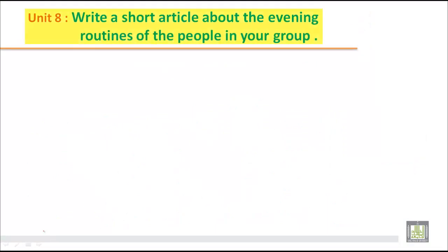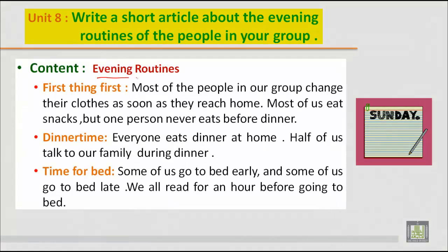Now let us summarize what we have studied so far. The topic is 'evening routine.' First thing first: most of the people in our group change their clothes as soon as they reach home. Most of us eat snacks, but one person never eats before dinner. During dinner time: everyone eats dinner at home, and half of us talk to our family during dinner. Time for bed: some of us go to bed early and some go to bed late, and we all read for an hour before going to bed. Hope you have got enough idea of how to write an article about the routines of the people in your group.